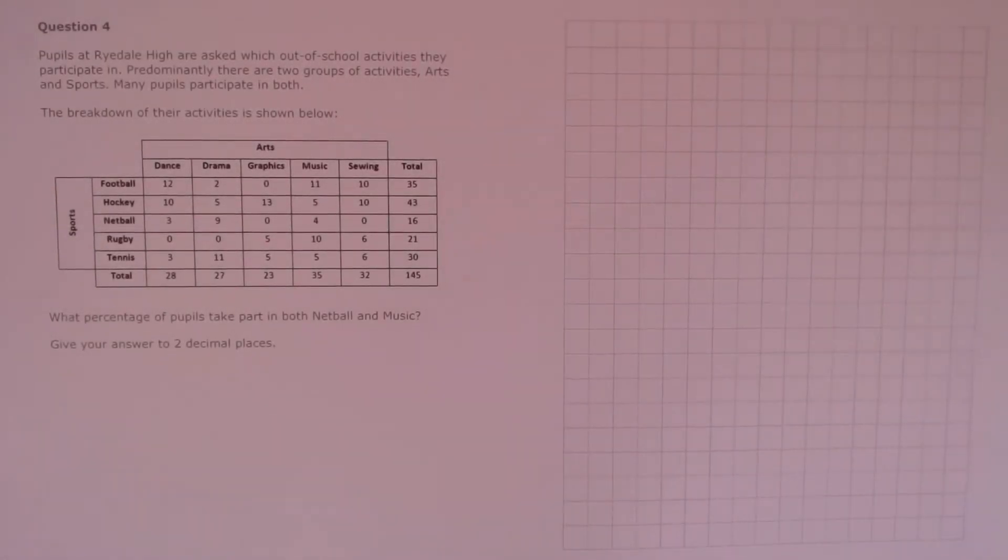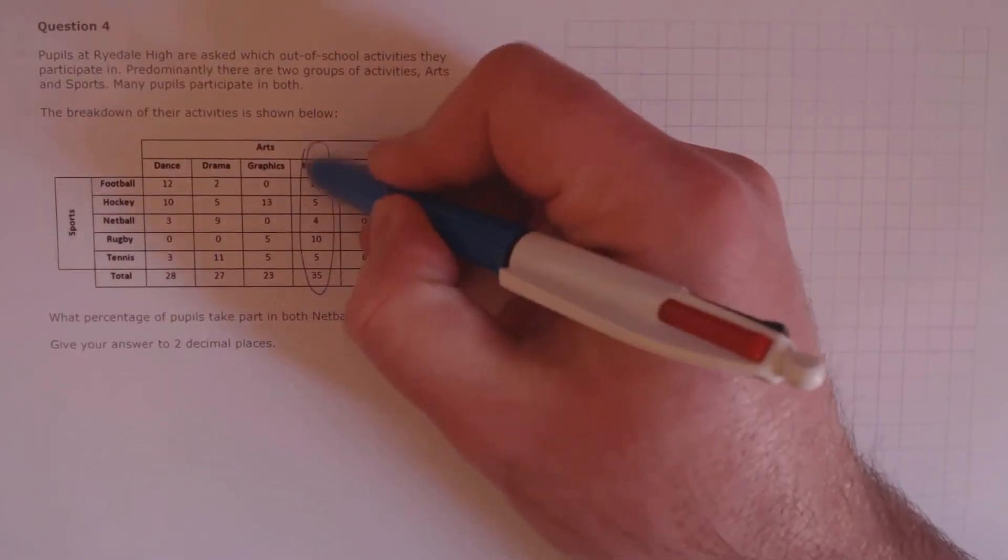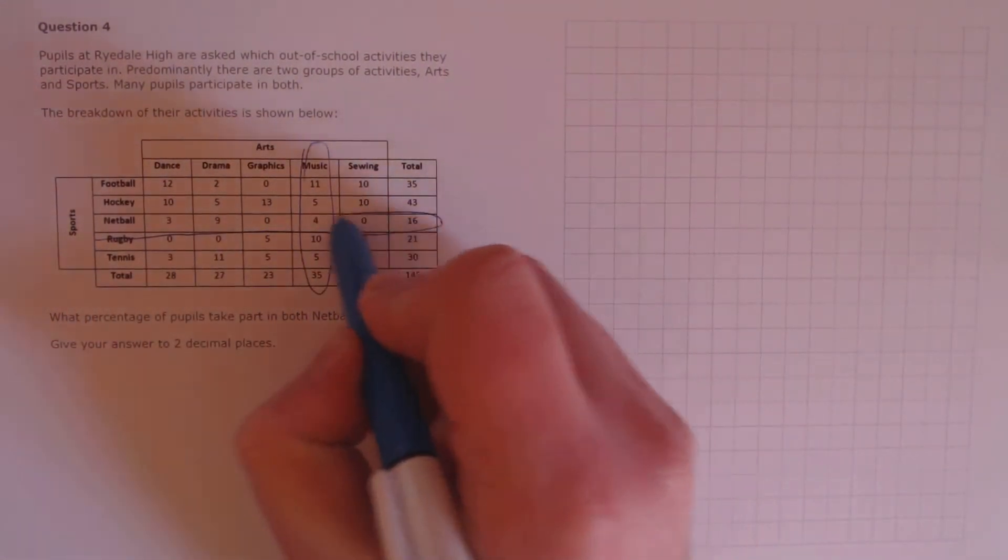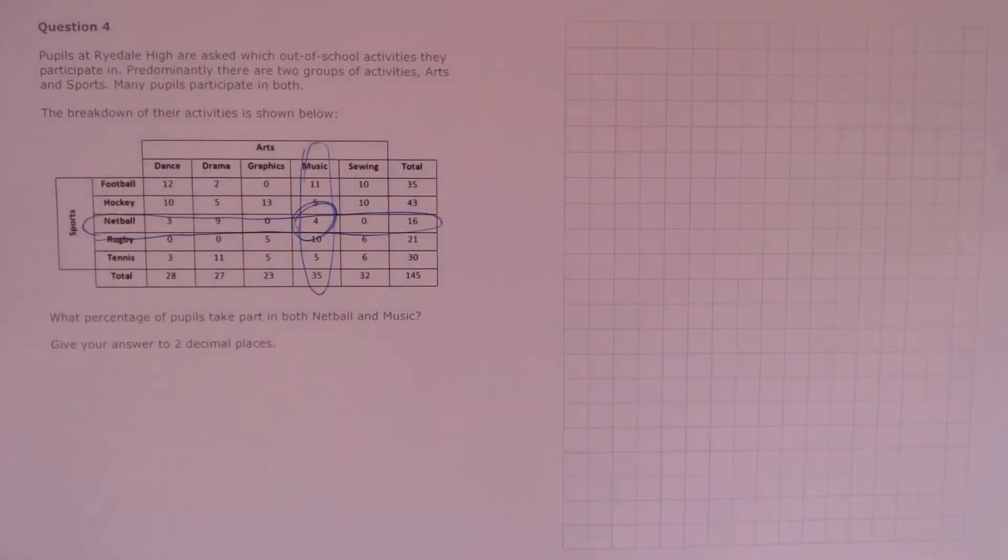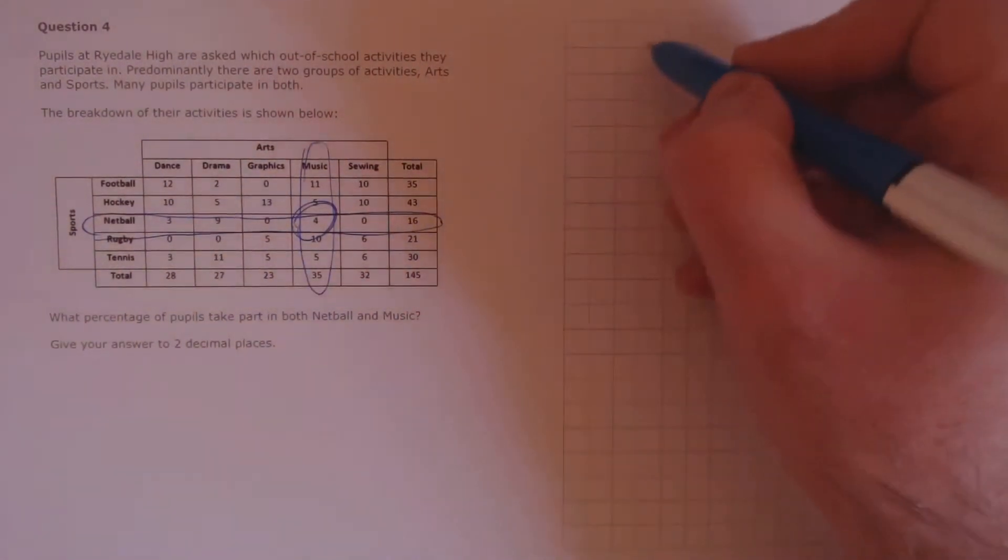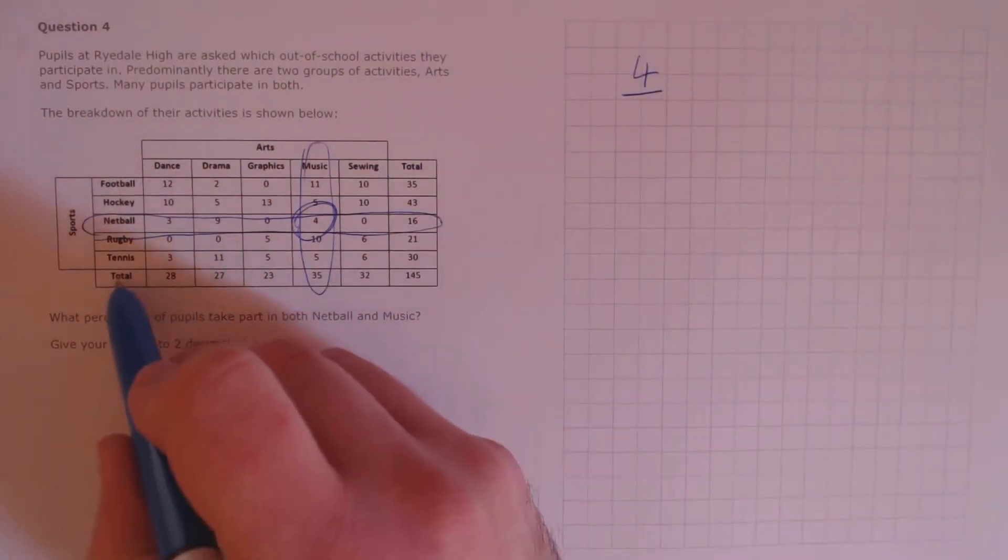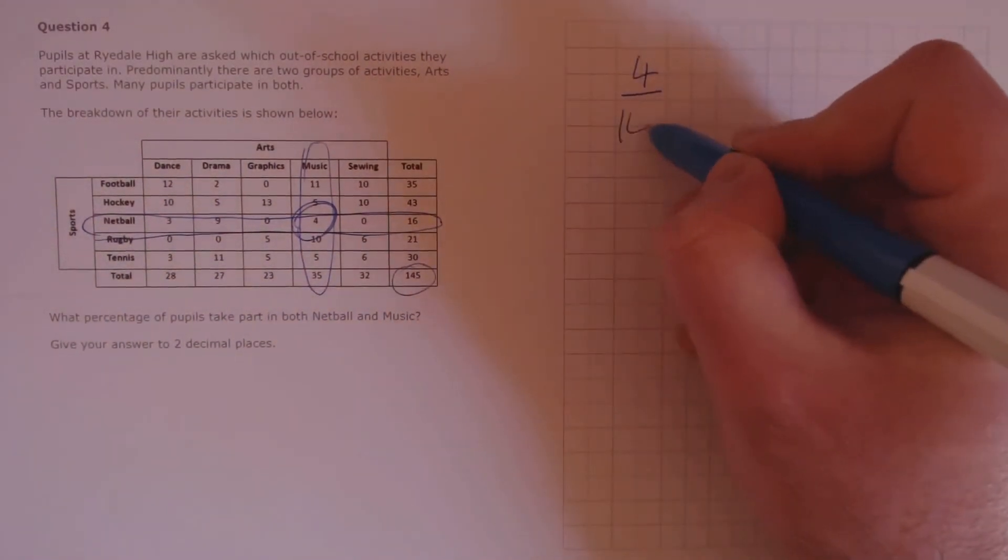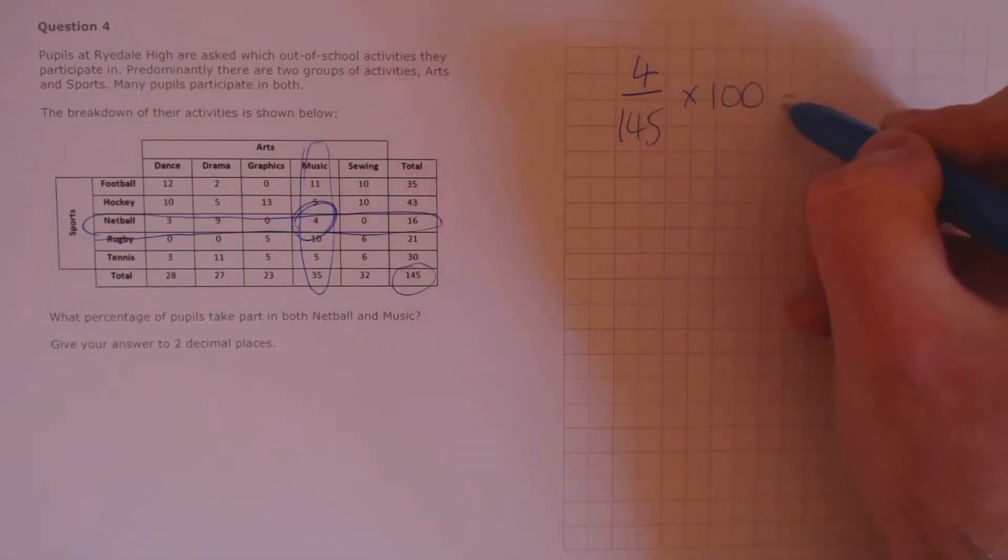Question 4. Pupils at Ryderdale High are asked which out of school activities they participate in. Predominantly, there are two groups of activities, arts and sports. Many pupils participate in both. The breakdown of their activities is shown below. What percentage of pupils take part in both netball and music? Give your answer to two decimal places. So if we look in the music column and the netball row, we're looking for the overlap between those two. That's here, 4. 4 students take both music and netball. So as a percentage of the total, we need 4 divided by the total number of students, that can be found here.